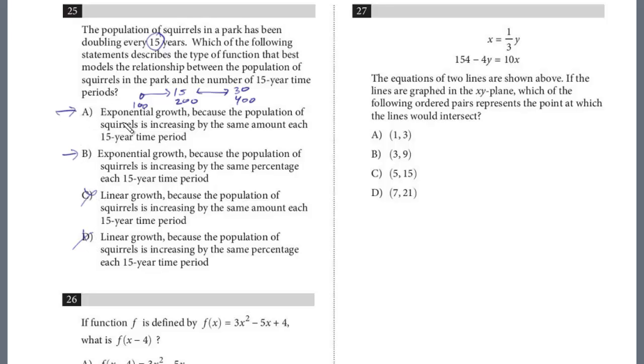And so these are the only two with exponential growth. We know the linear growth answers are out. Exponential growth because the population of the squirrels is increasing by the same amount? No, it's not the same amount, and that would be linear anyway. Exponential growth because the population of the squirrels is increasing by the same percentage? Each 15, yes. So the same percentage is not the same as the same amount. And so the answer here is B.